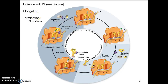Elongation adds additional amino acids to the chain, extending it one by one. Eventually, the ribosome hits one of the three termination codons and stops. The ribosome is told to stop calling for amino acids, the protein is assembled, and it gets shipped by the Golgi body or transported to wherever it's needed within the cell. It's a very organized and sequenced process when we look at translation.